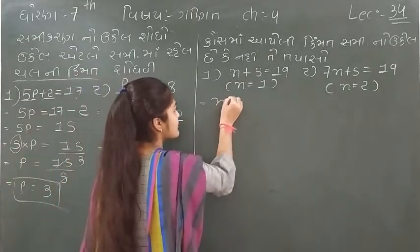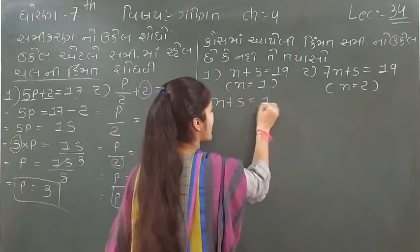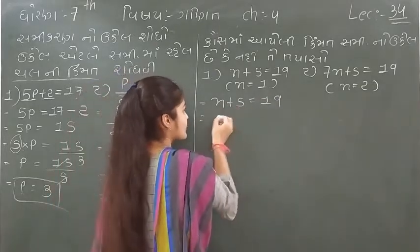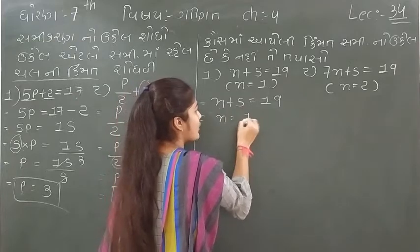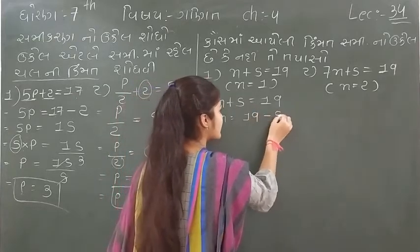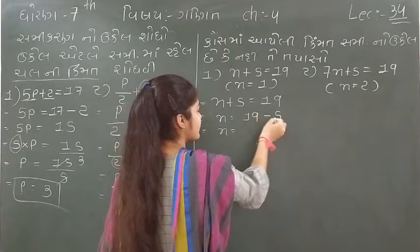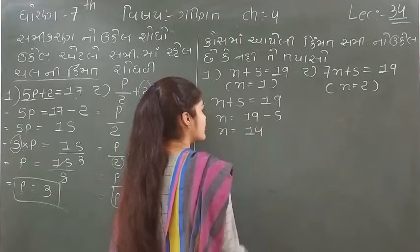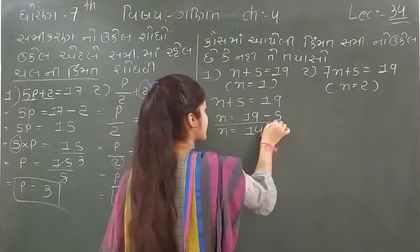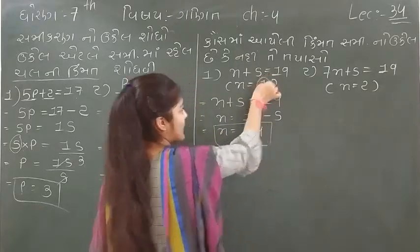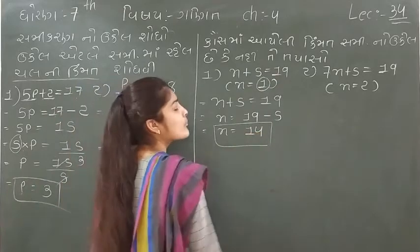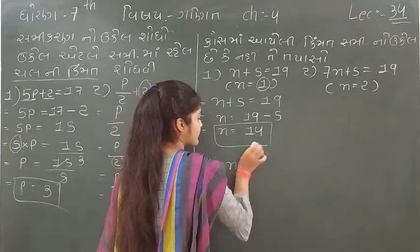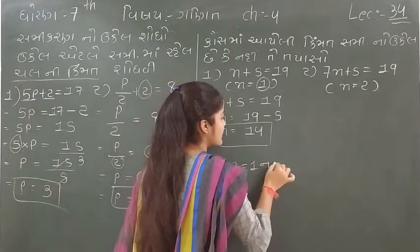We will be equal to n plus 5 minus 1. If n is equal to 5, then n is equal to 5 minus 1. So if n is equal to 5, then n is equal to 5, and that is now equal to 9.